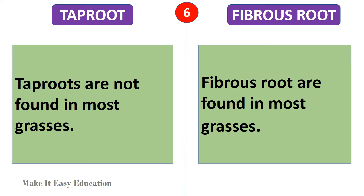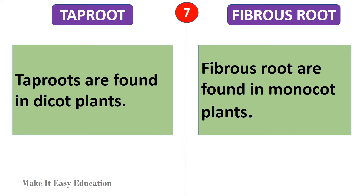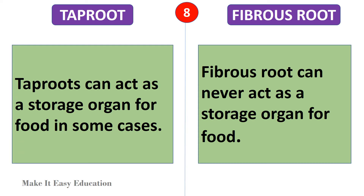Taproots are not found in most grasses. Fibrous roots are found in most grasses. Taproots are found in dicot plants. Fibrous roots are found in monocot plants.